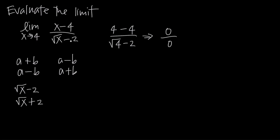We're going to evaluate the limit by multiplying both the numerator and denominator by the conjugate of the denominator. You might ask why not multiply by the conjugate of the numerator — x minus 4's conjugate would be x plus 4. But it's helpful to multiply by the conjugate of the expression involving the square root, because when we multiply a square root by itself the square roots cancel out. It'll become more clear as we work through the problem.